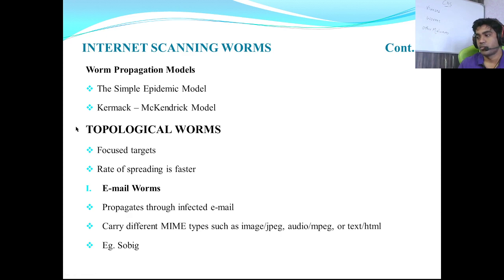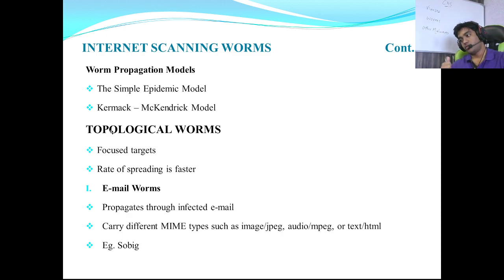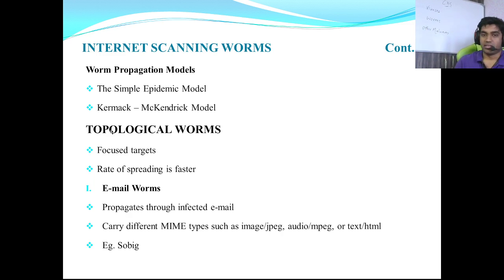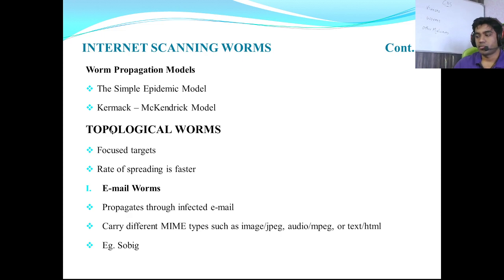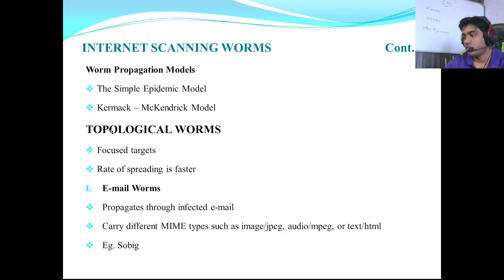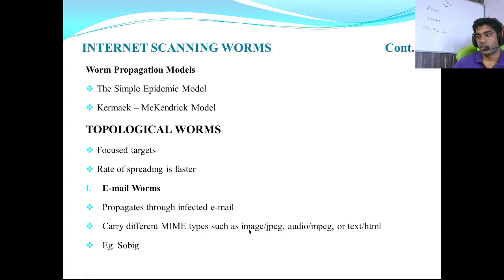The next category of worms is email worms, also called topological worms. They have focused targets and spreading is faster. They propagate through infected email — it scans all the addresses in your email address book, retrieves copies of all contacts, scans the complete email, locates the target, and affects that individual or machine. An example is the worm called 'Sobig', which is an example of an email worm. It can carry different types of data including images.